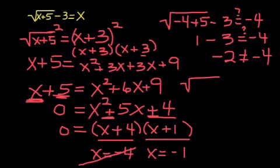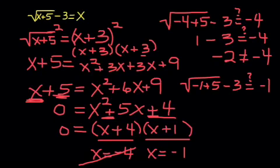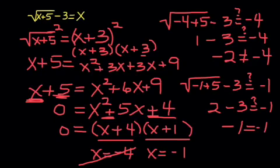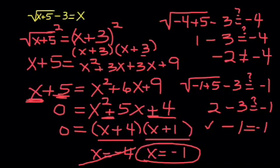Negative 4 is not an answer for this equation. I need to do the same thing with negative 1. Plugging negative 1 into the original equation in both x's: negative 1 plus 5 is 4, square root of 4 is 2, and negative 3 plus 2 is negative 1. That is a true statement — they are equal, they check. Therefore x equals negative 1 is a solution and in fact is our only solution to this square root equation.